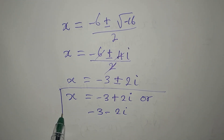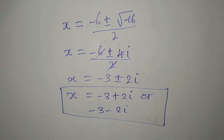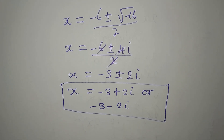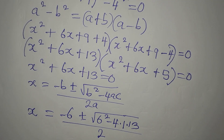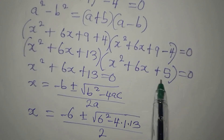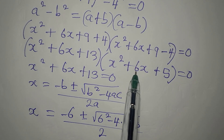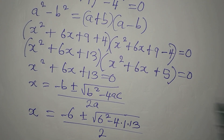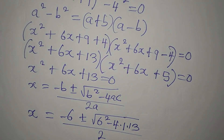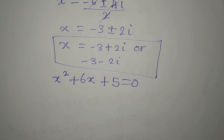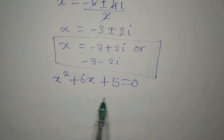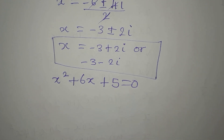We now have two solutions from that factor. We'll go back to the other factor we left out. From this second factor we shall get two additional solutions. This is also a quadratic equation when equated to zero.